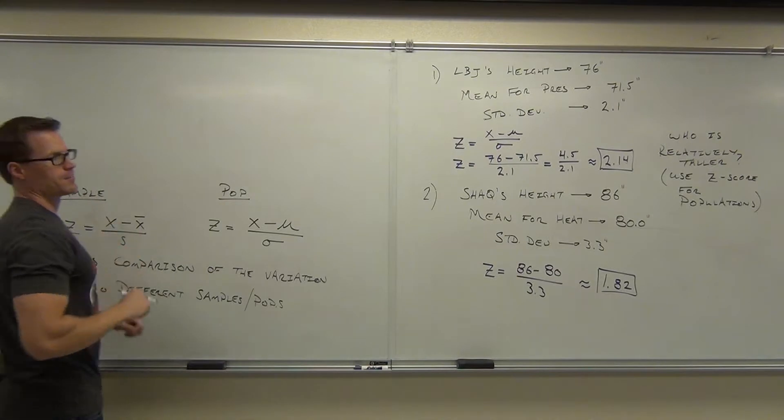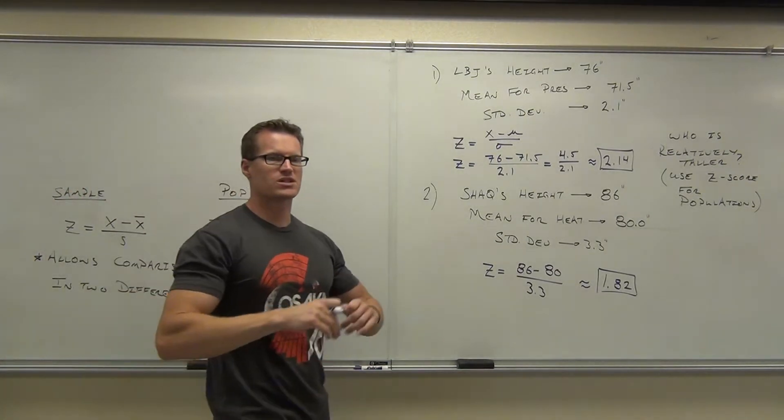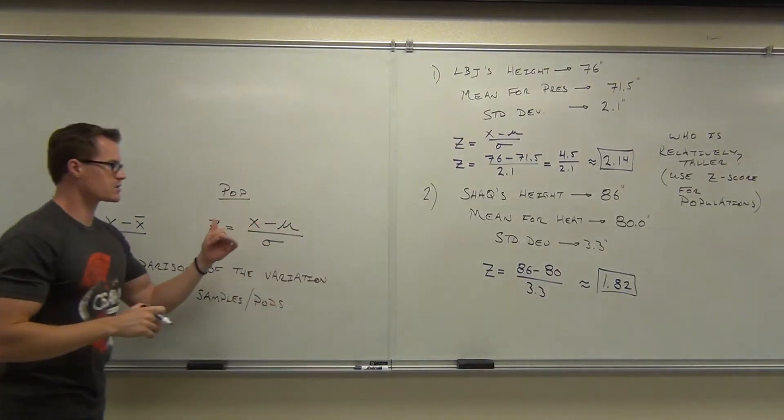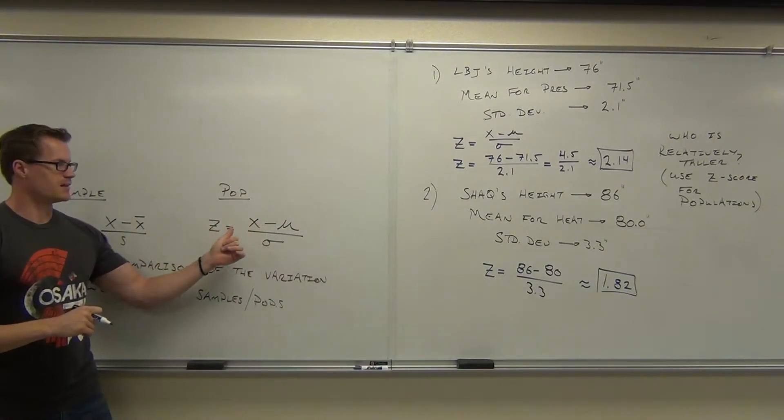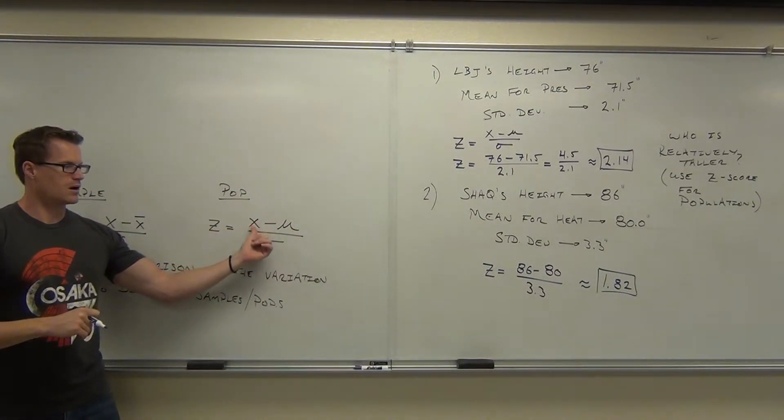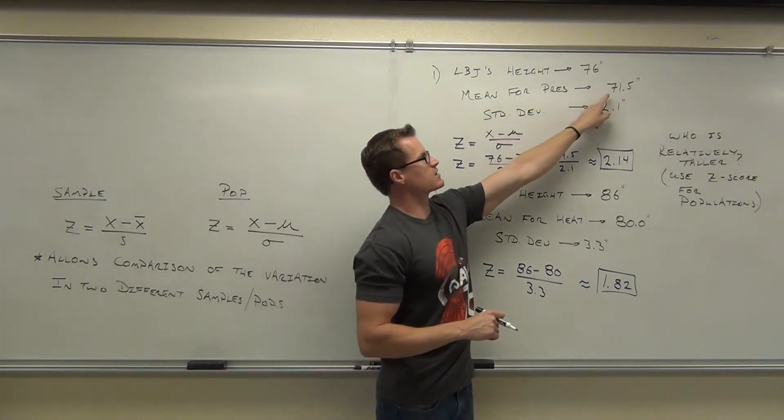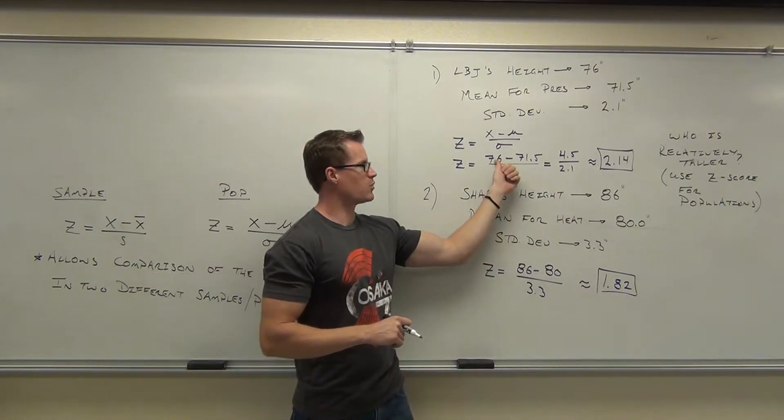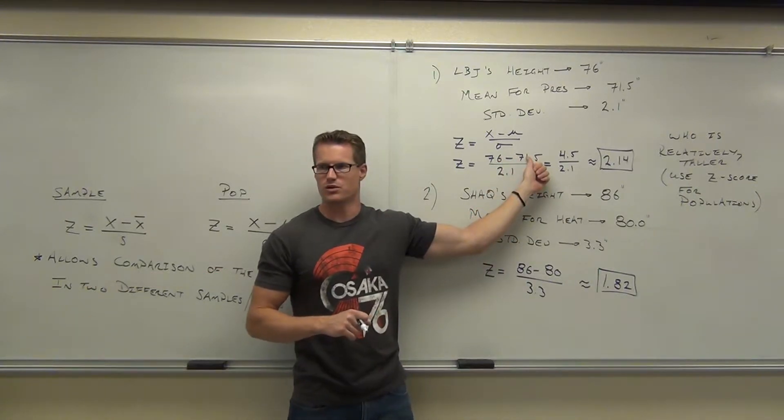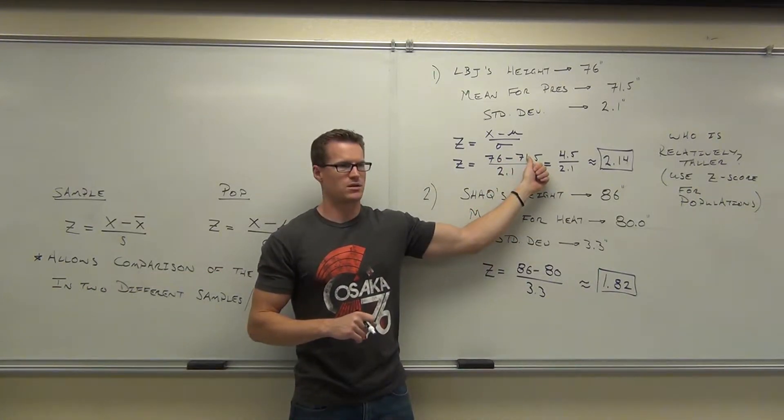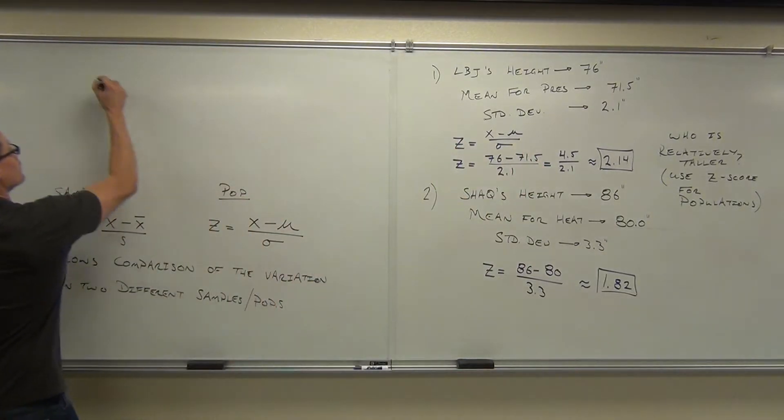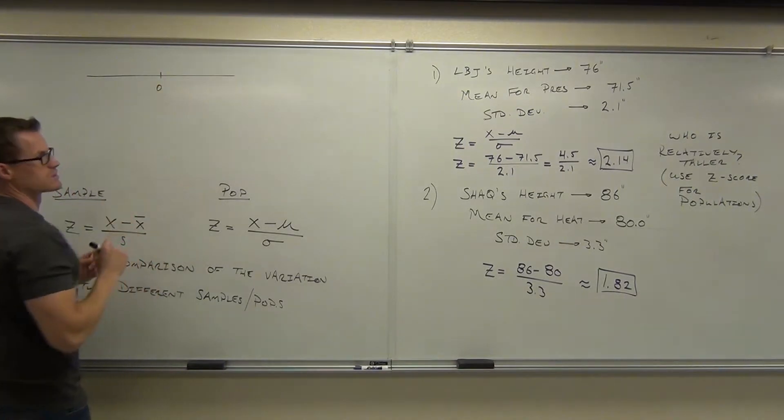That means 68% of your data is going to be between a Z score of negative one and a Z score of one. It's the same information. It's just given to you a slightly different way. So if I have, by the way, what's a Z score if I give you the value of the mean itself? If you look at this formula, if I said, for instance, what if LBJ had been 71.5?